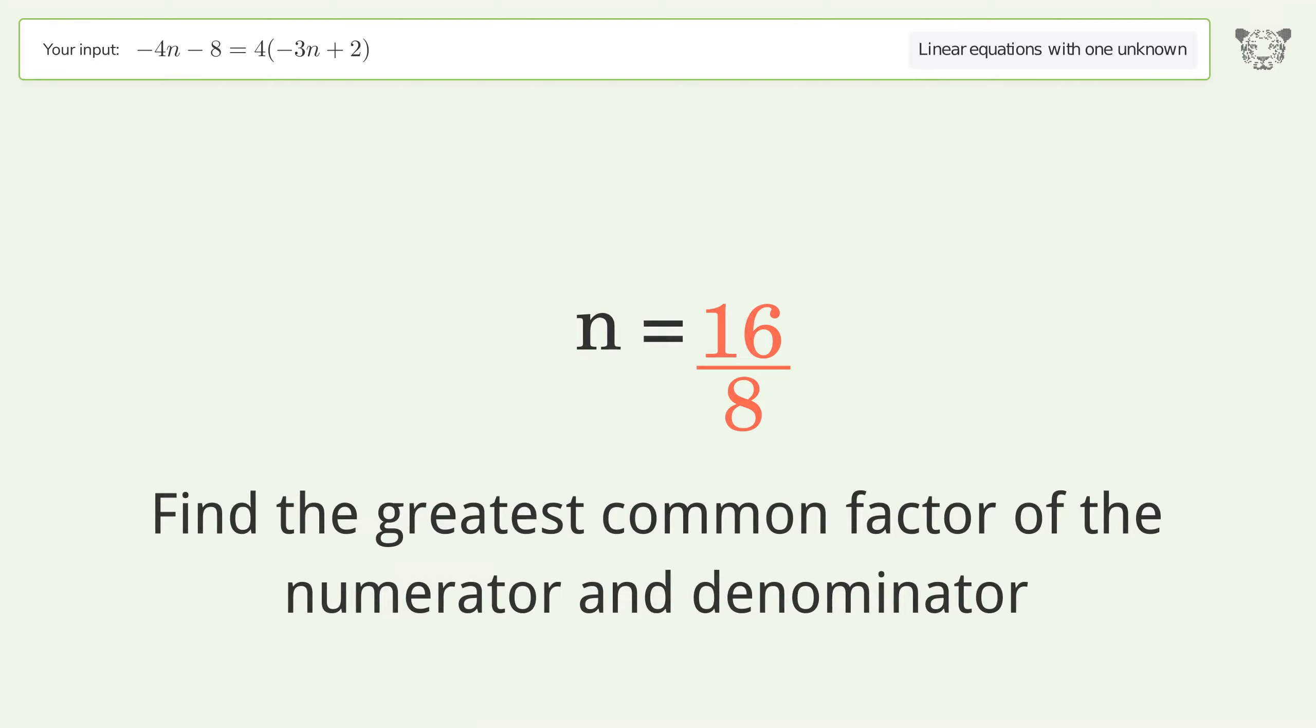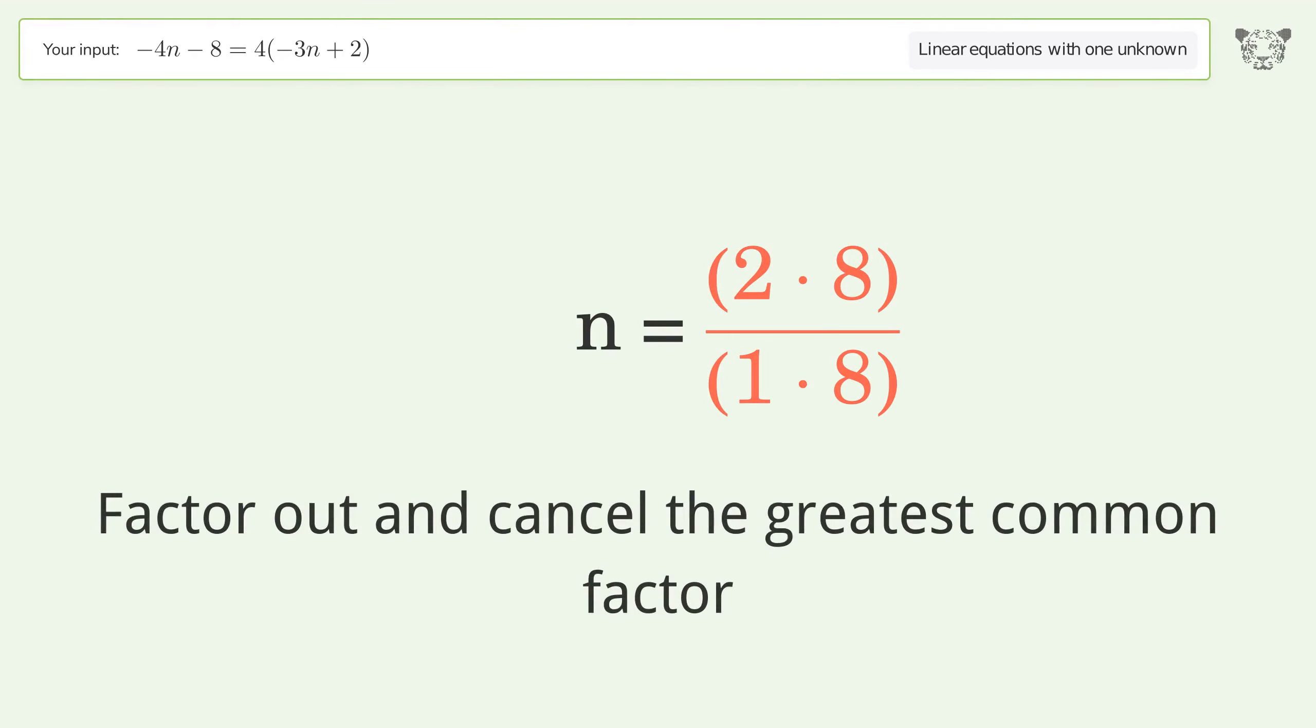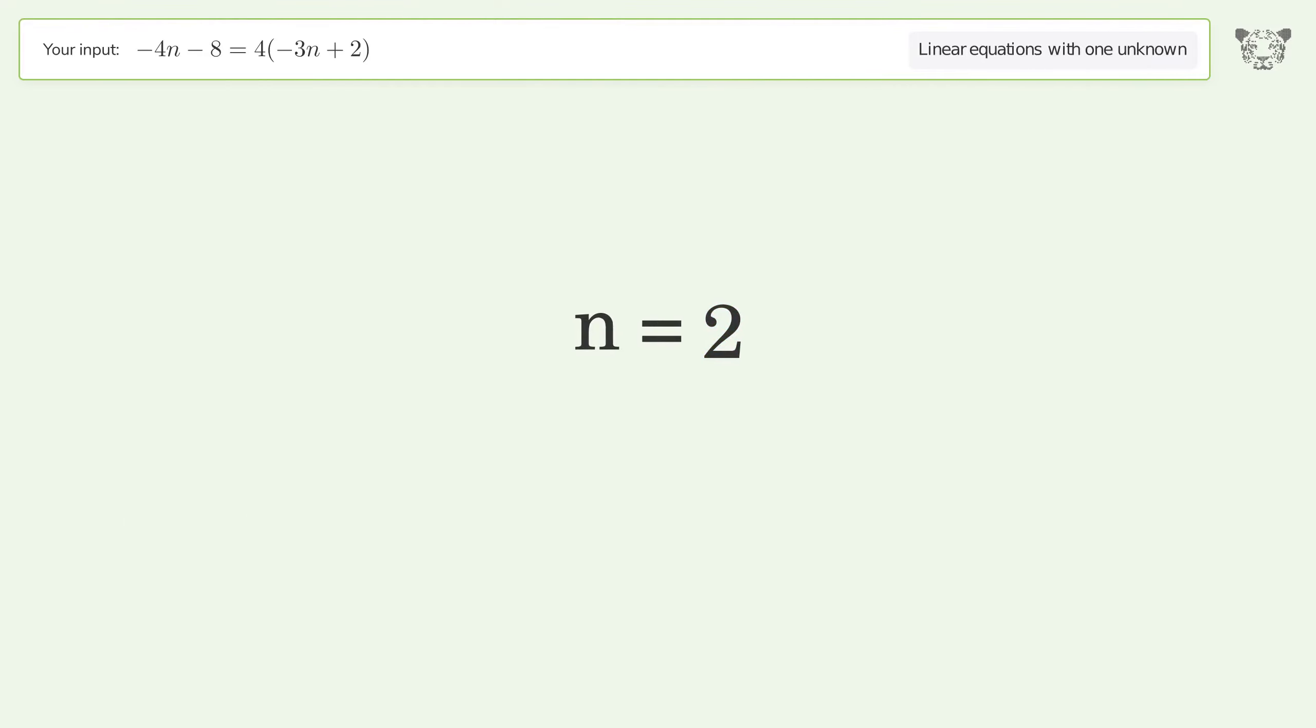Find the greatest common factor of the numerator and denominator. Factor out and cancel the greatest common factor. The final result is n equals 2.